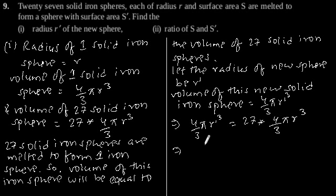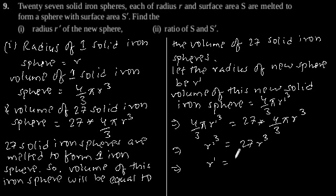This implies r dash to the power 3 equals 27 r to the power 3, which implies r dash is equal to 3r. So the radius r dash of the new sphere is equal to 3r.